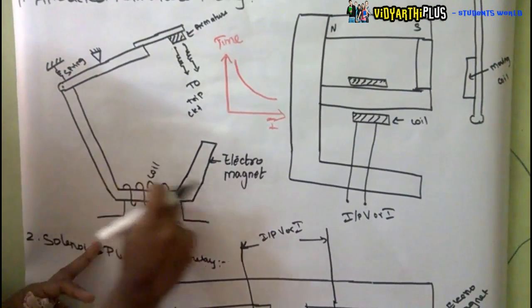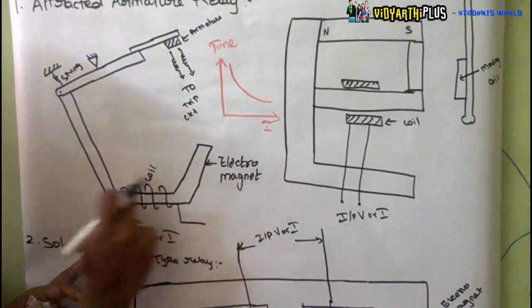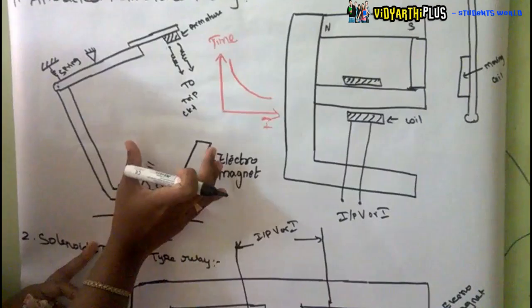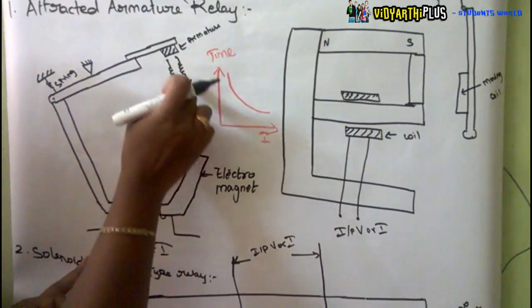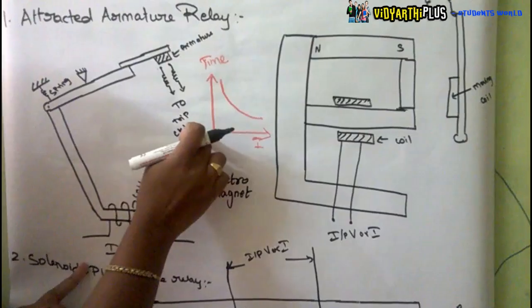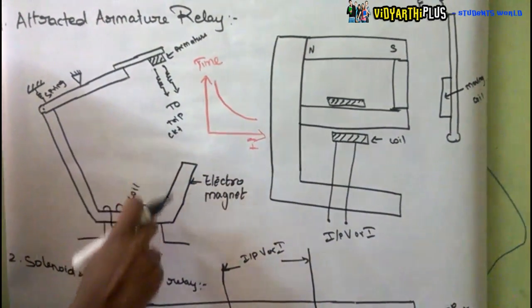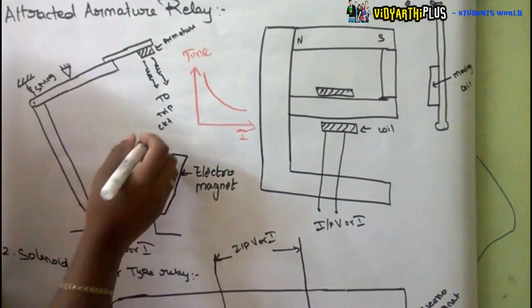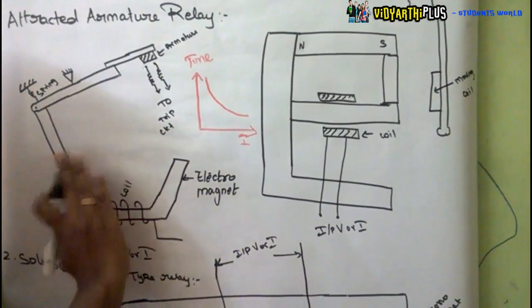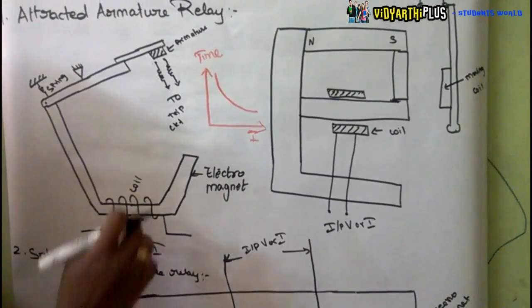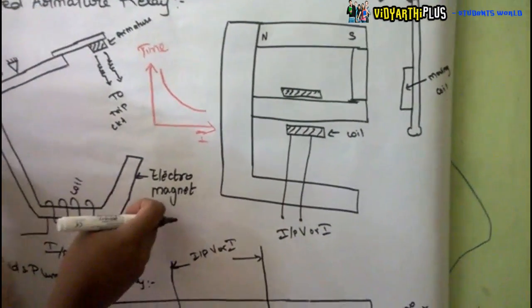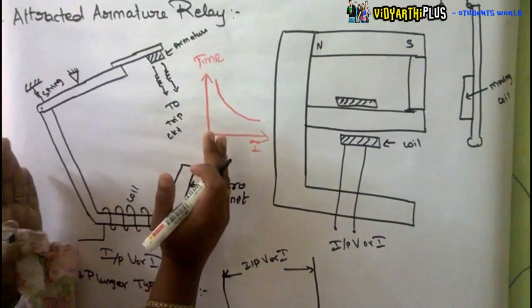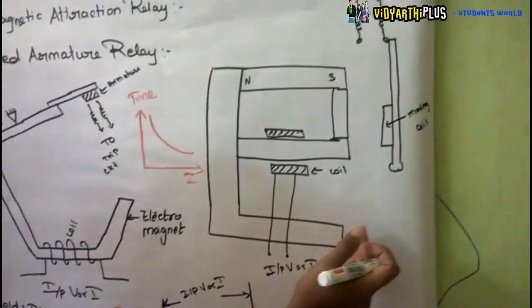If the current goes high, this electromagnet becomes energized and it will attract the armature. As the armature gets attracted, it energizes and goes to the trip circuit. As the trip circuit gets energized, the circuit breaker opens and immediately the faulty part is isolated from the healthy part. There are two diagrammatic representations: the horizontal type and the vertical type.